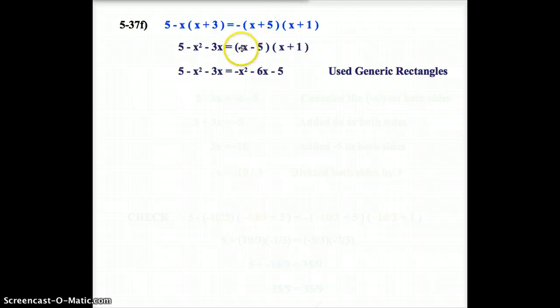Over here, the negative times x is negative x. The negative times 5 is negative 5. Now, I also need to do the next step, which you can see I already did for you, and I need to combine these two right here.